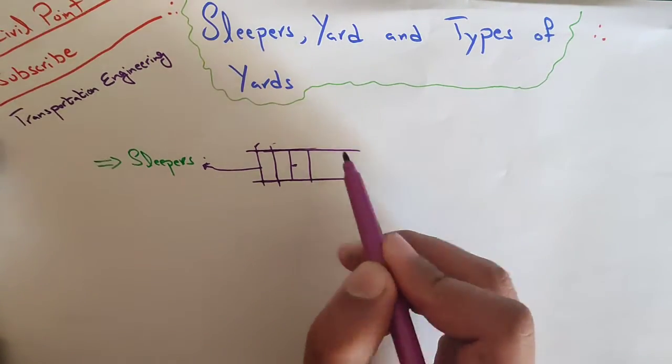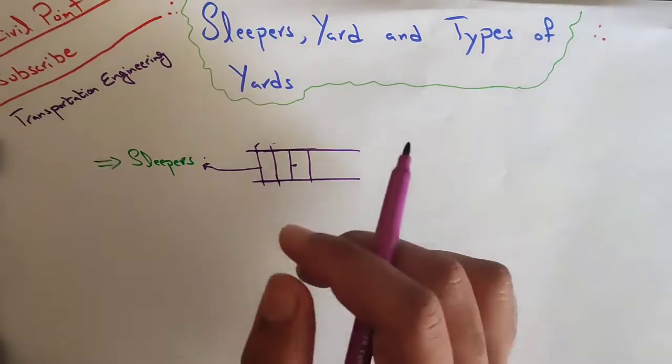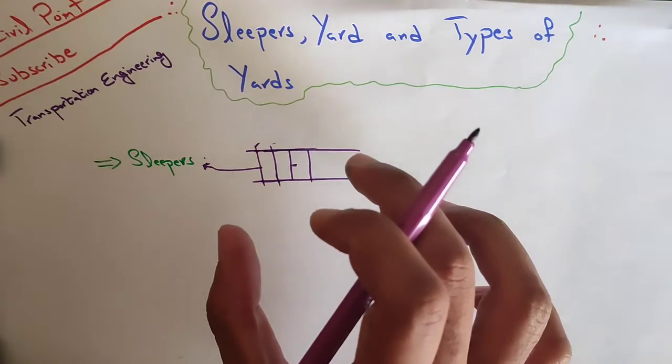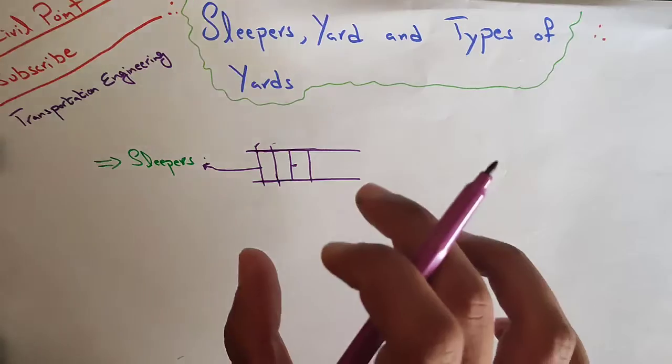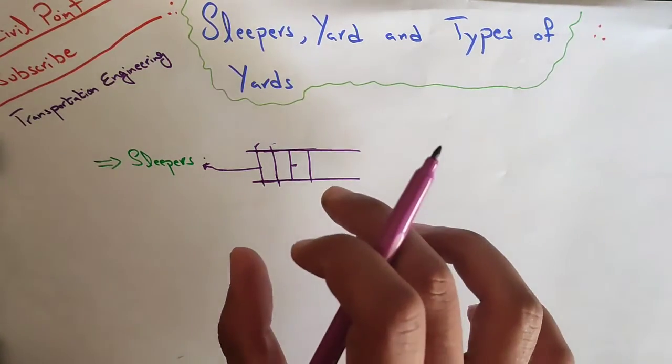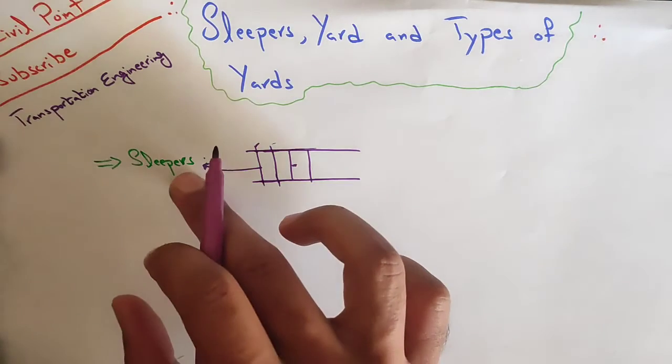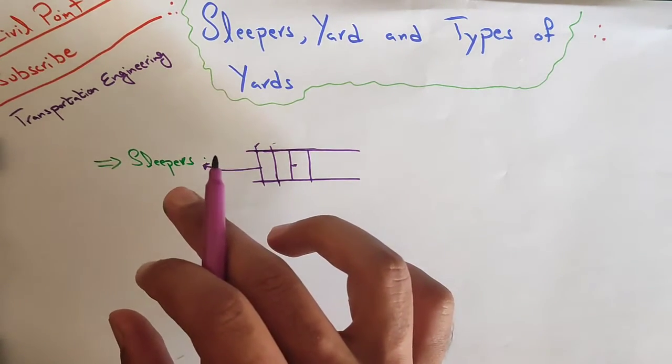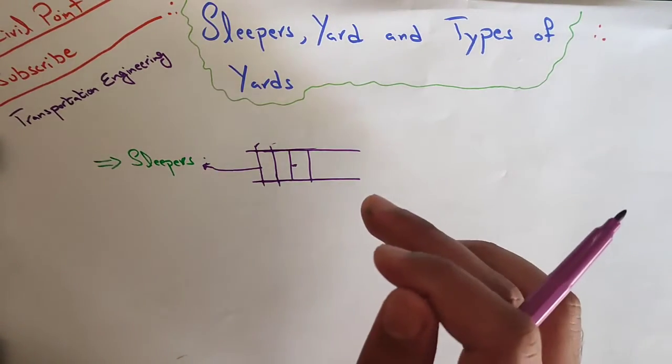Basically they maintain the uniformity of that railway track and hold the rail strongly. They also transfer the load from rails to the ballast or ground. They have multiple functions and offer longitudinal and lateral stability to the track.